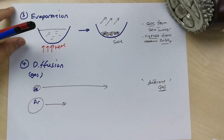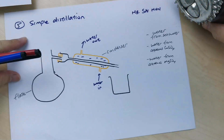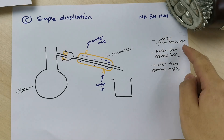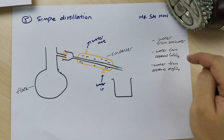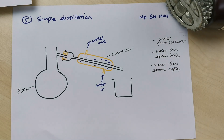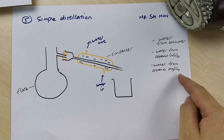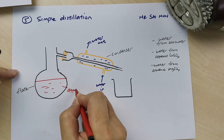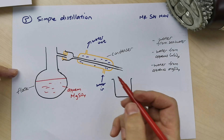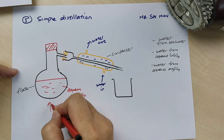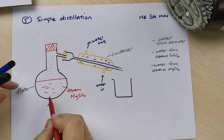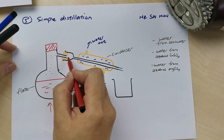Next is simple distillation. Simple distillation is used to get liquid — specifically water — from an aqueous solution, like water from seawater, water from copper sulfate, or water from MgSO₄. For example, for aqueous magnesium sulfate: you pour the solution in, seal it up, and heat it. The water will vaporize while the MgSO₄ stays behind.